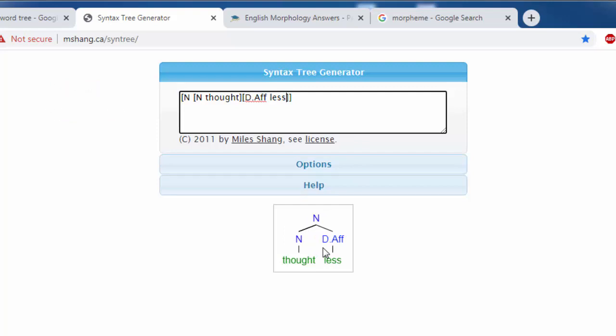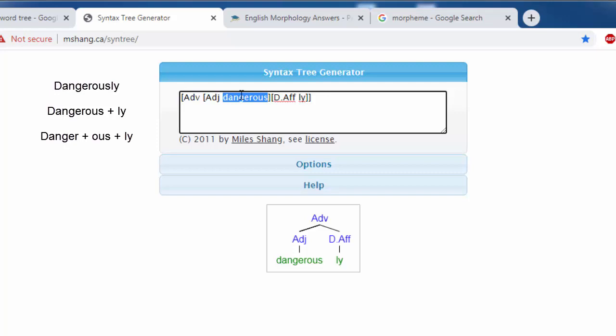Let's try another example, the word 'dangerously'. It is an adverb divided into two parts: the adjective 'dangerous' and the derivational affix 'ly'. We can also divide the adjective 'dangerous' into morphemes. We add the brackets for the first and the brackets for the second. The first is the noun 'danger', the second is the derivational affix 'ous'.